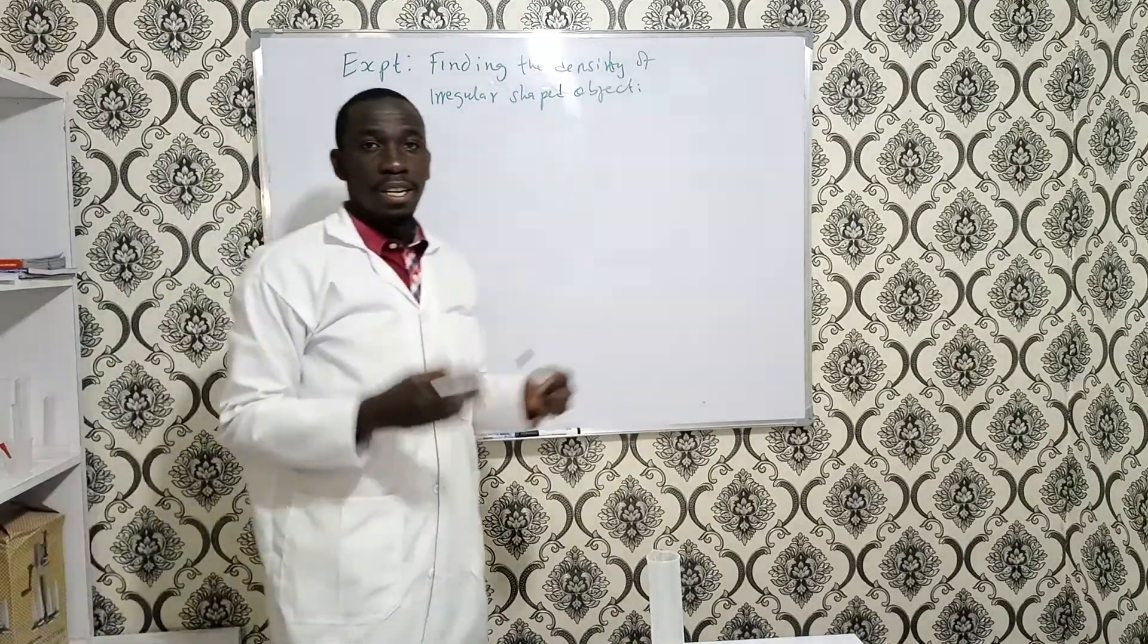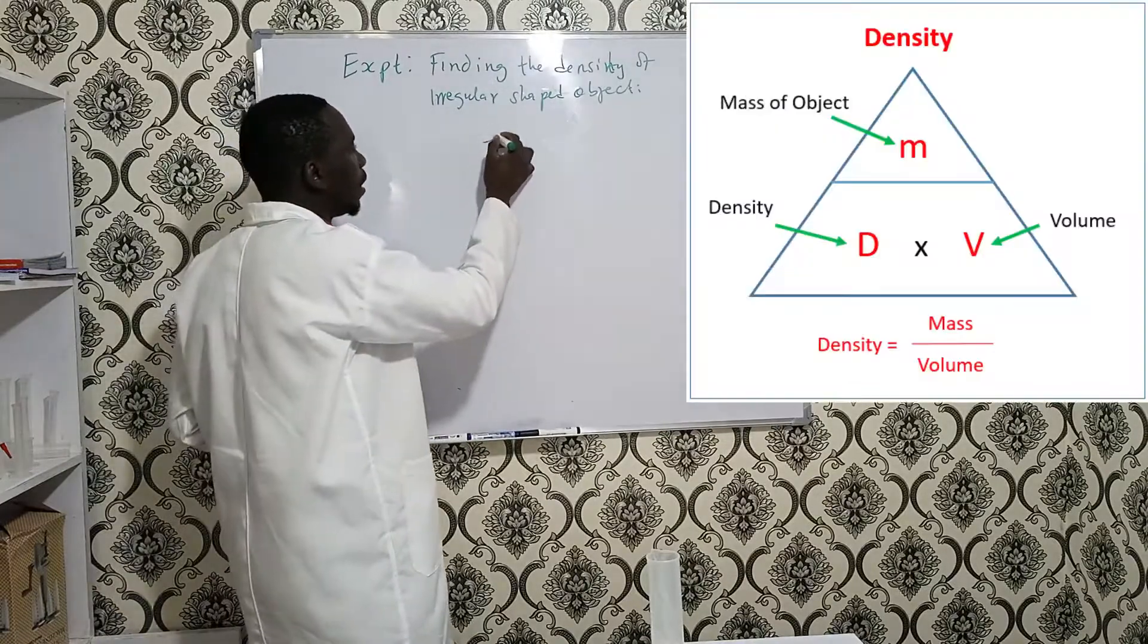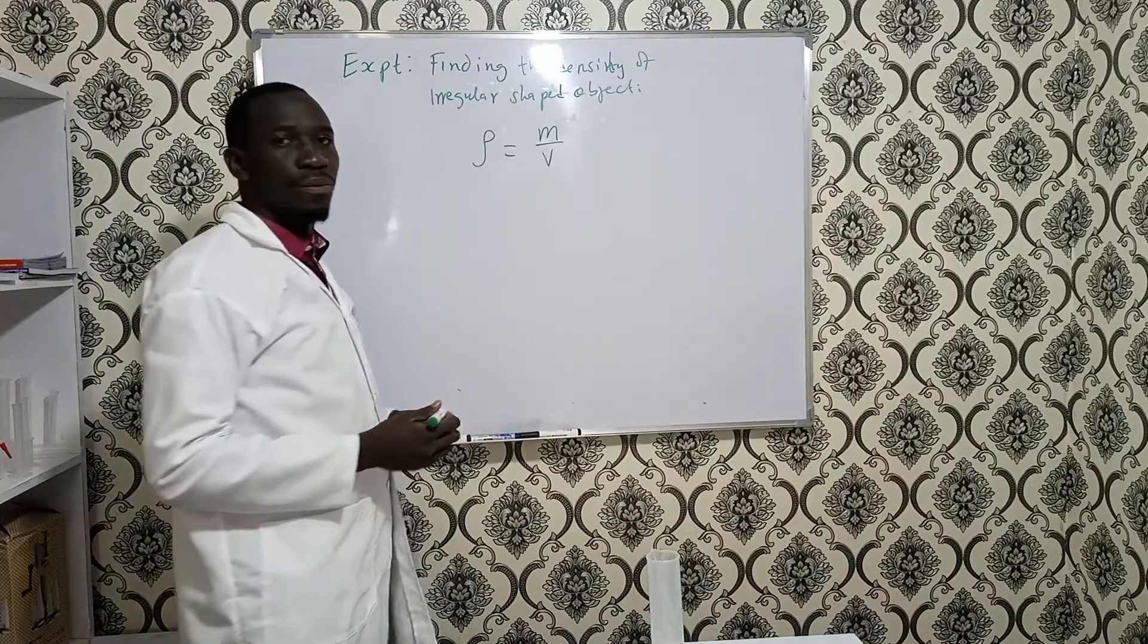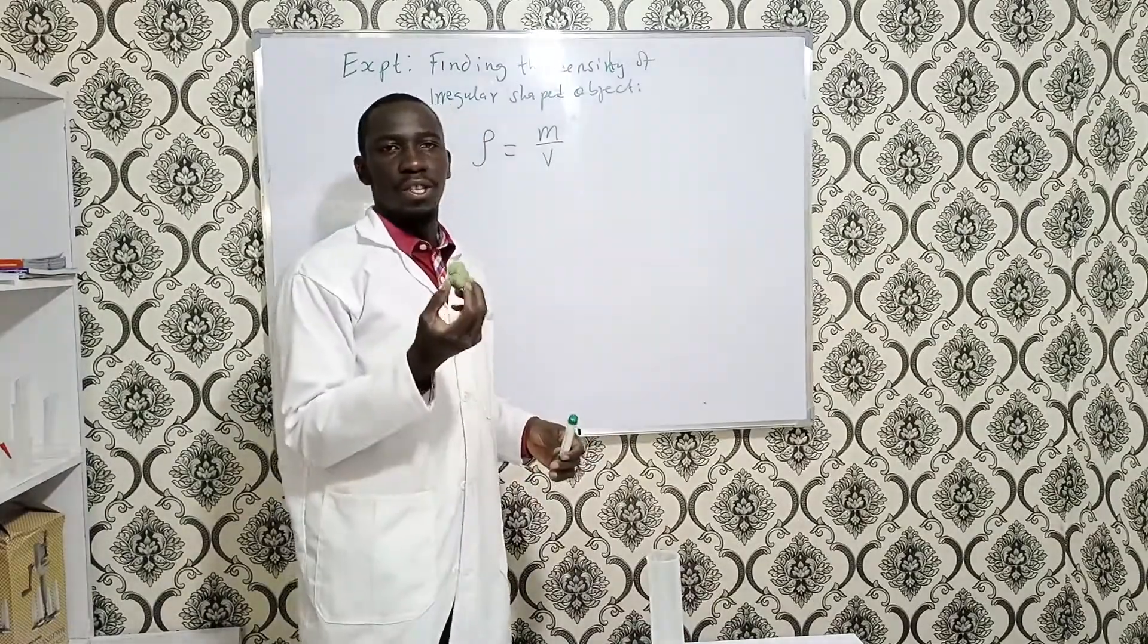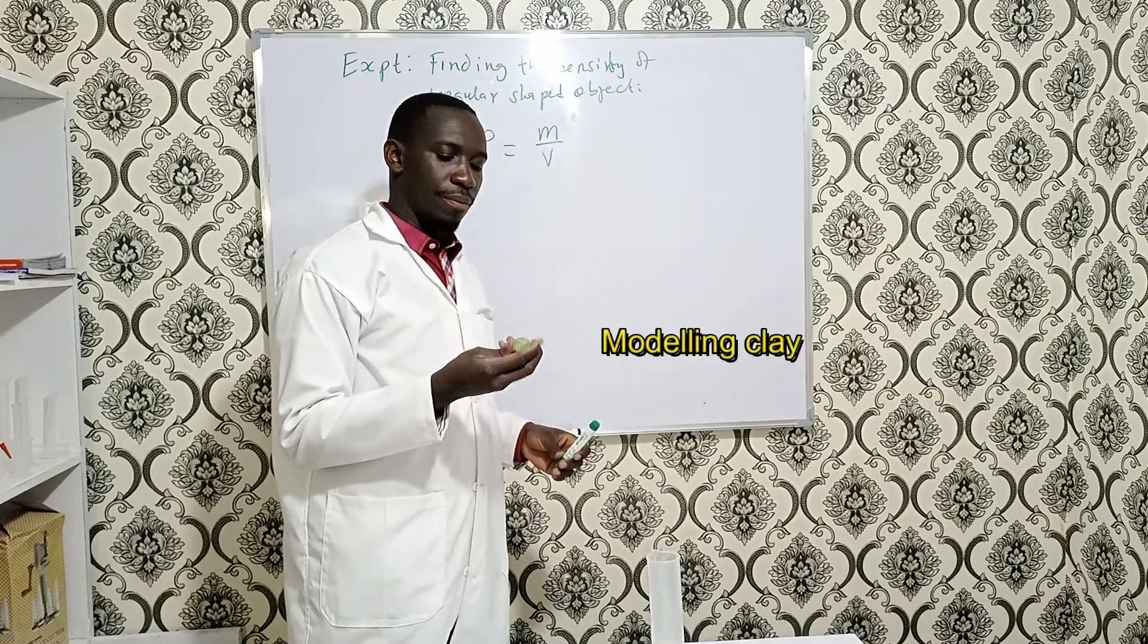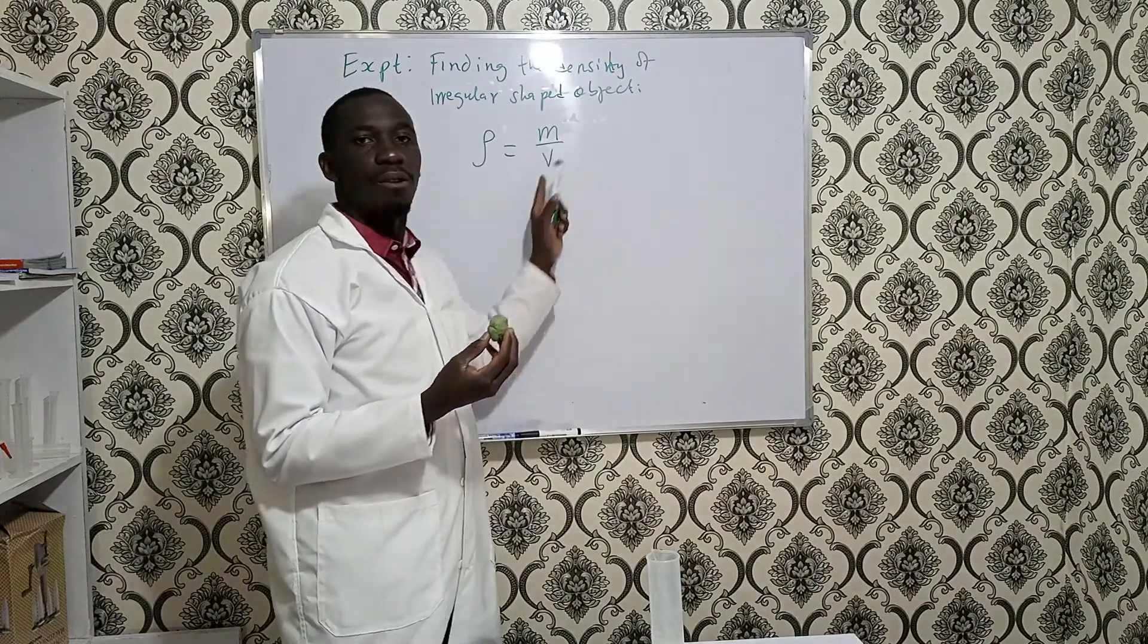To find the density of a material, we know that density is given by mass divided by volume. That means if we need to find the density of this material, there is a clay, we need to find its mass, we need to find its volume.